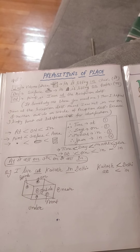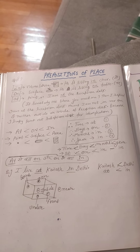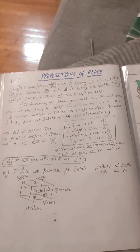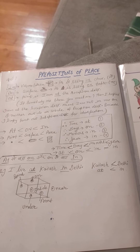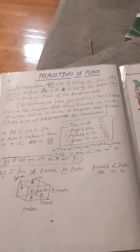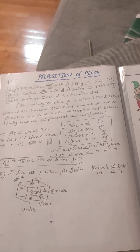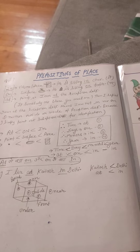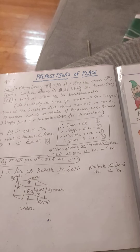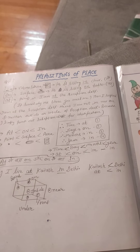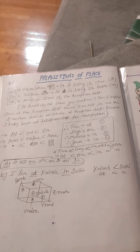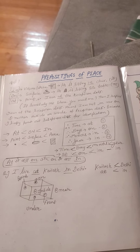At — point. On — surface. In — area. So, if we define some small thing or small place, we use at. If we define any surface of an object, we use on. If we define the area of any object or anything, we use in.